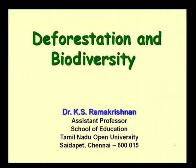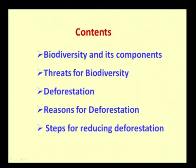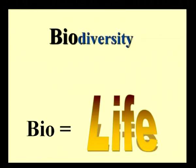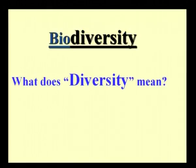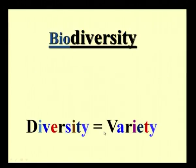First of all, let us see what biodiversity is. We are going to discuss biodiversity and its components, threats to biodiversity, deforestation, reasons for deforestation, and steps for reducing deforestation. Bio means life, and therefore biodiversity is the diversity of plant and animal species existing in the present environment.